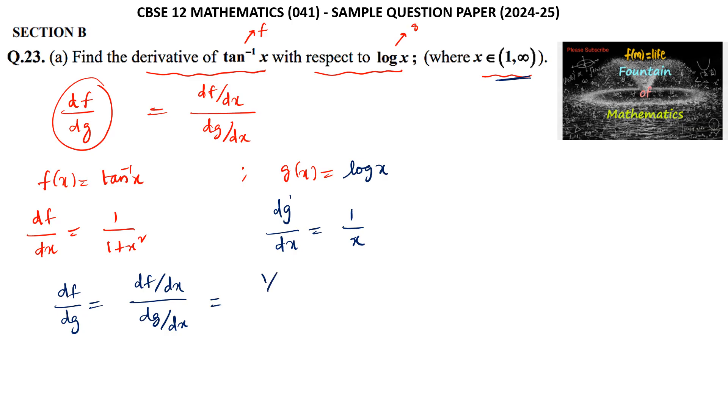That is 1 upon 1 plus x square divided by 1 upon x, so we get x upon 1 plus x square as the answer.